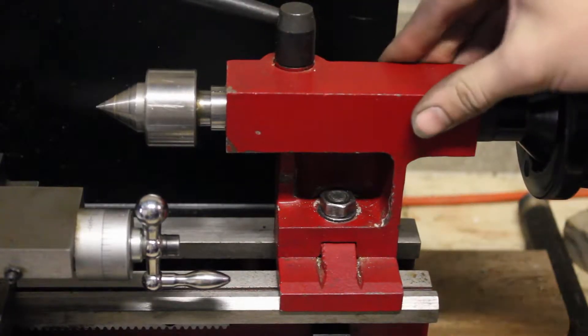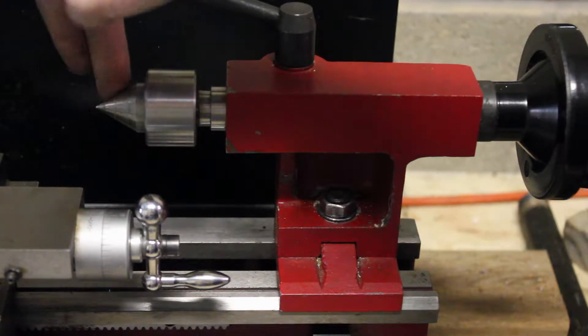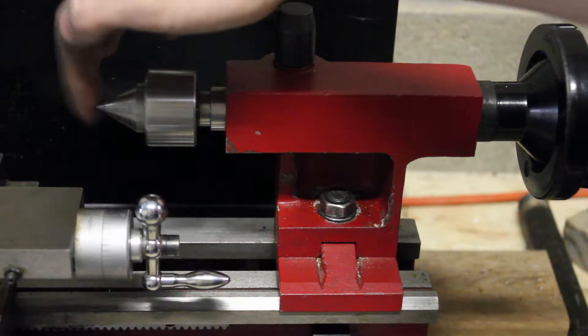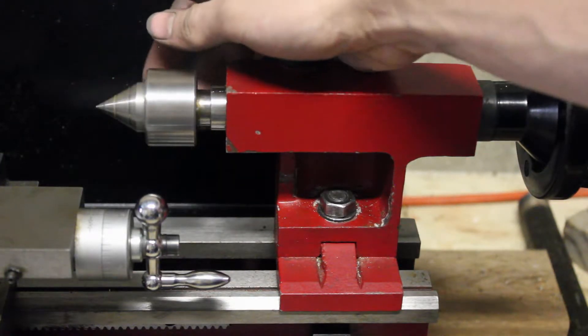This back section here is the tailstock and it has right now in it a point called a center. This is a live center because it's on bearings and it spins.